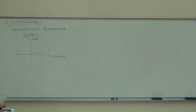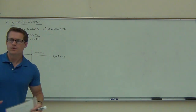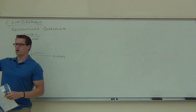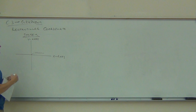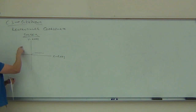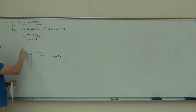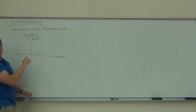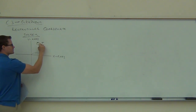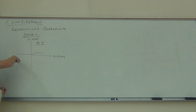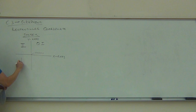When we look at the XY axis or the rectangular coordinate plane, we see four quadrants. Quadrant one is in the upper right. The quadrants go counterclockwise — so this is one, two, three, and four.